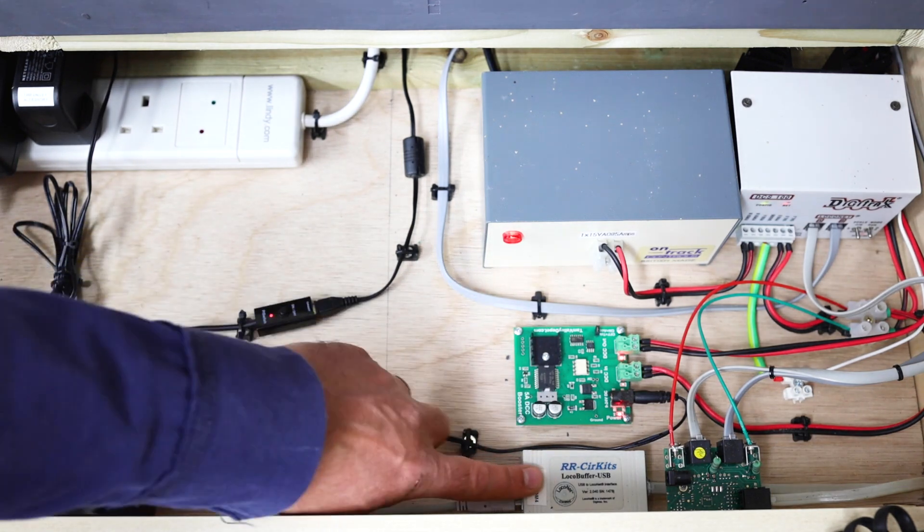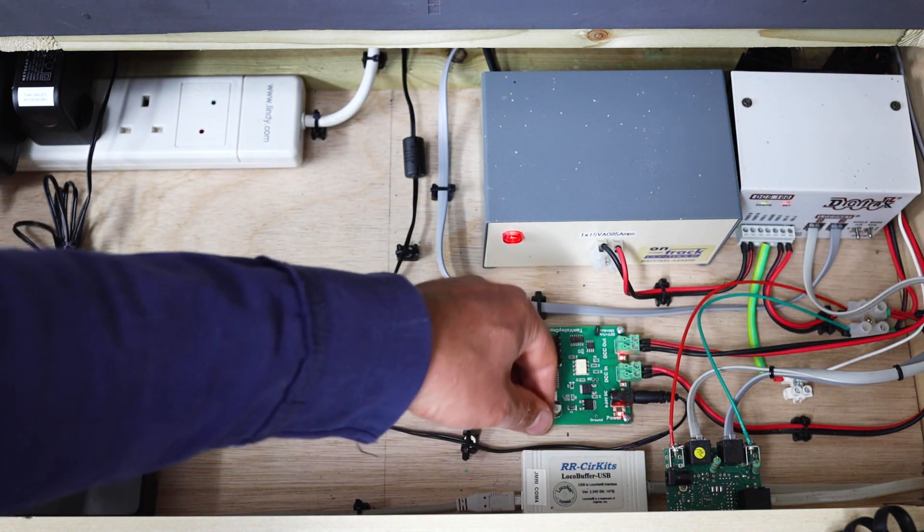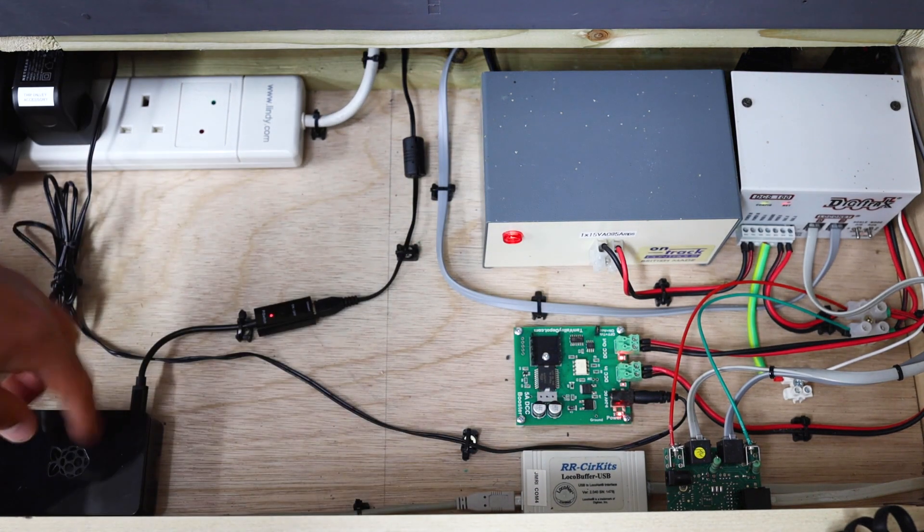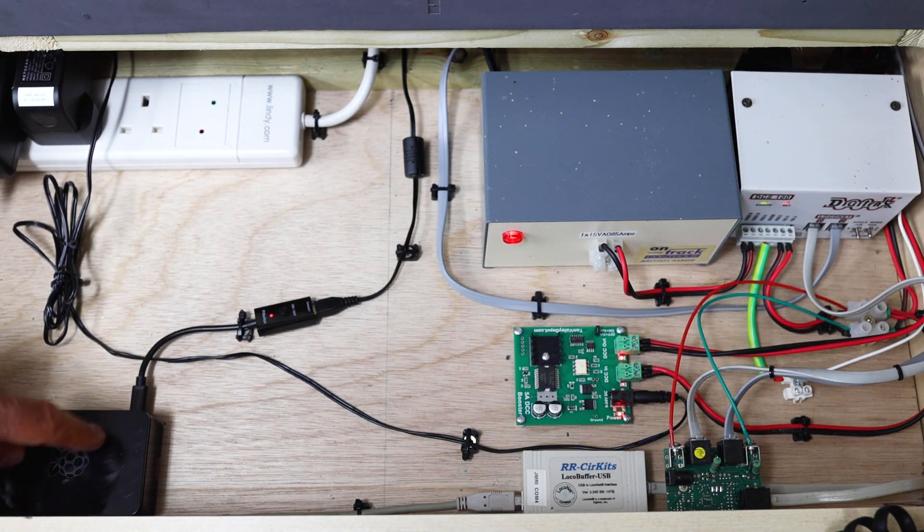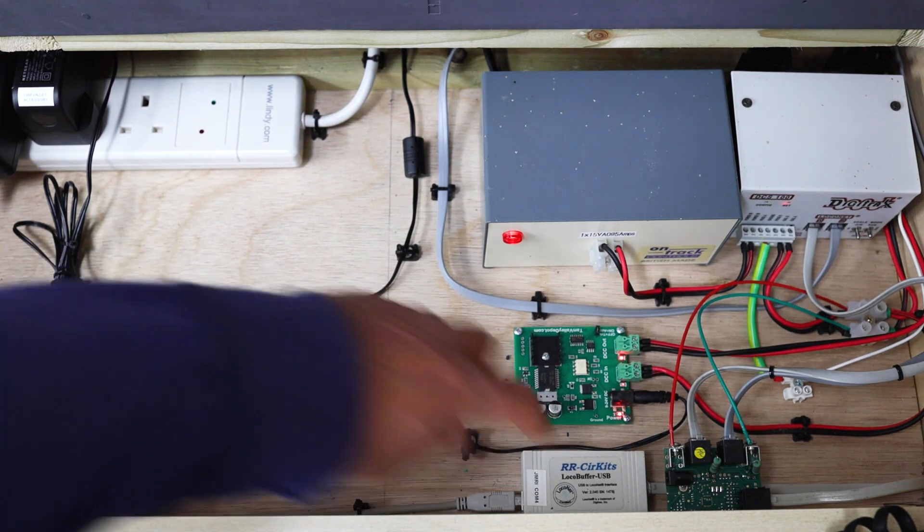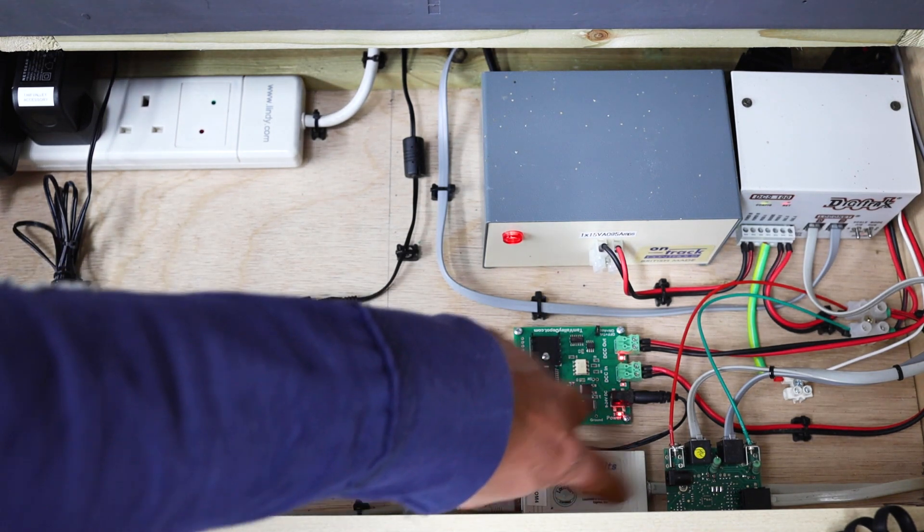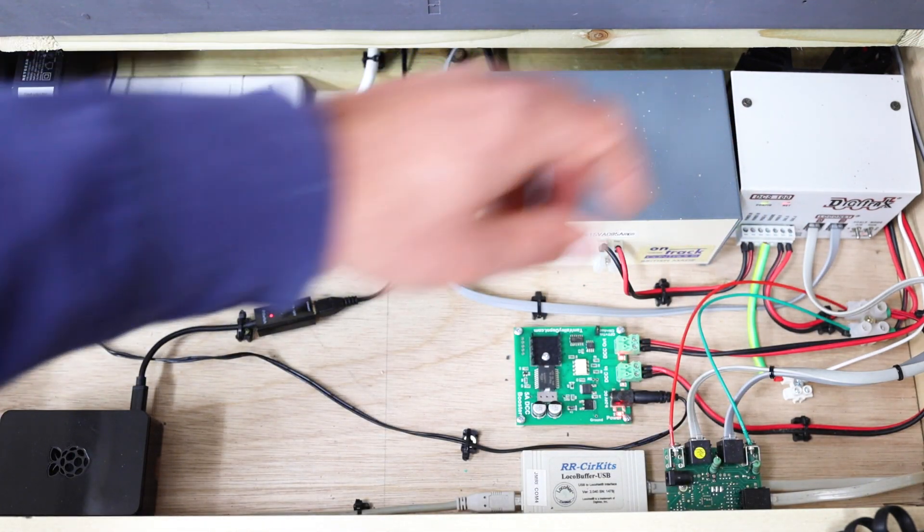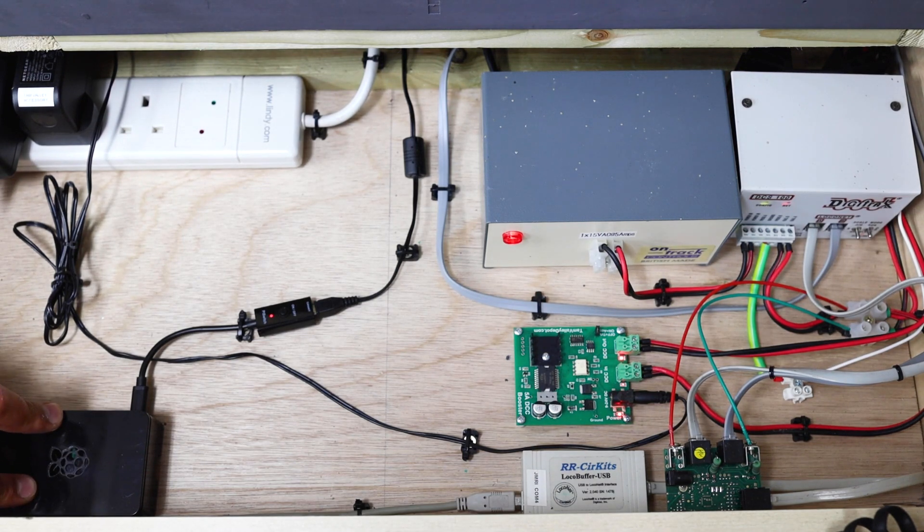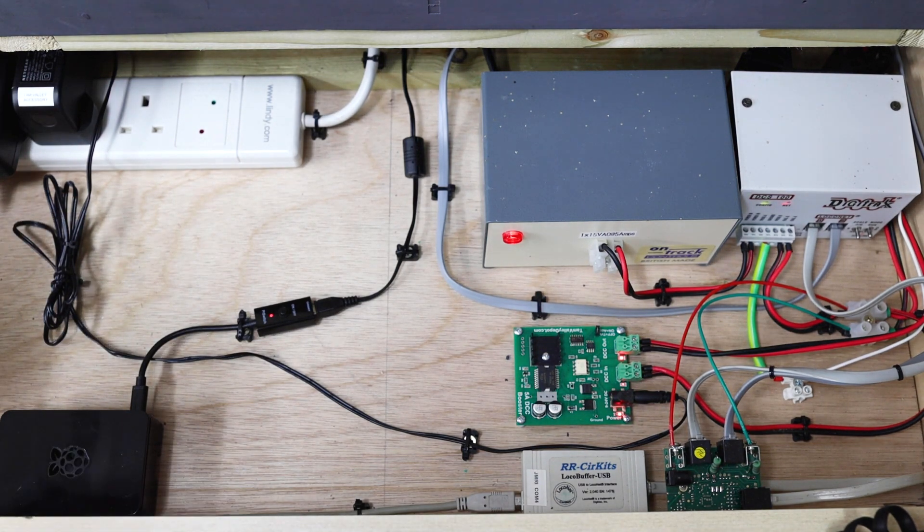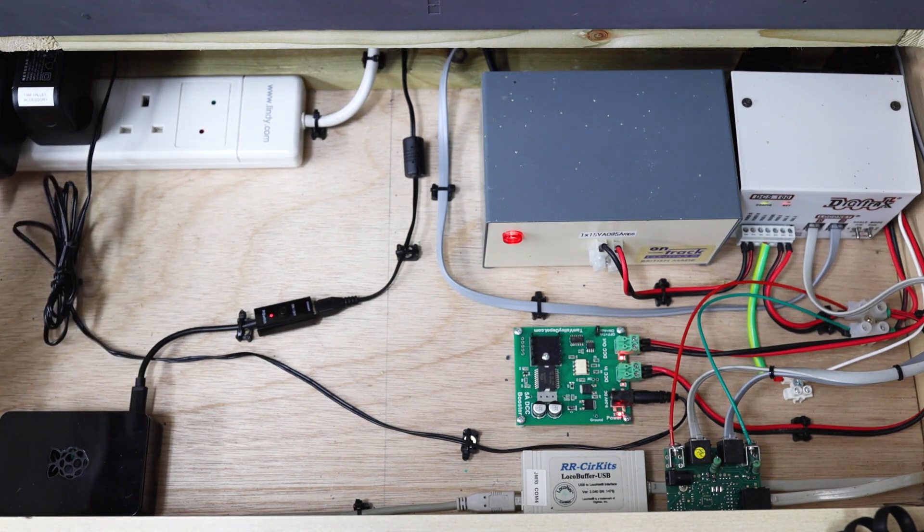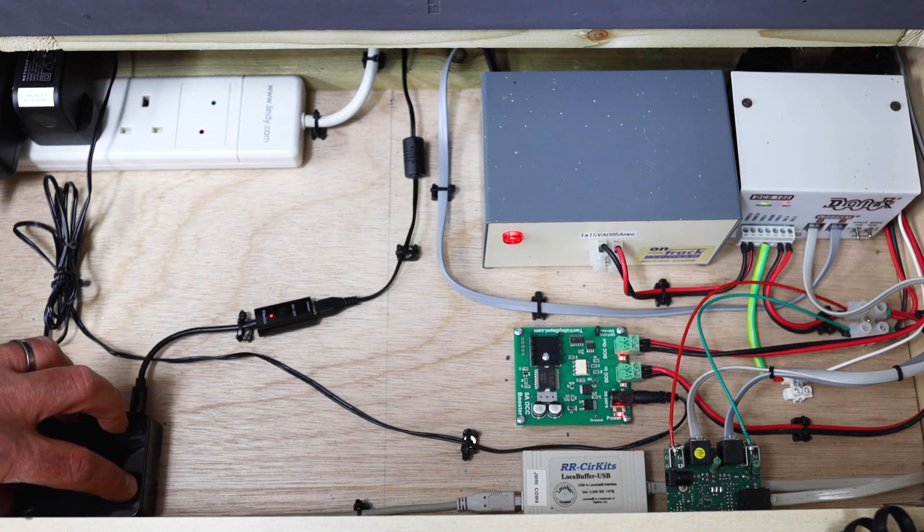Over here, I've got a LocoBuffer USB interface for the computer. There's a USB cable here that runs all the way to my Raspberry Pi. This is what's running JMRI. So I've got a USB connection between that and the LocoBuffer, and then from the LocoBuffer into the DCC system. Everything is controlled from the Raspberry Pi, which I can access remotely. I've also got a monitor I can plug in if I need to, but otherwise it's all just connected via Real VNC, which is a remote desktop connection. And I can control everything from here.